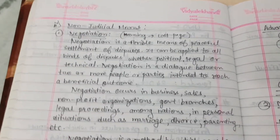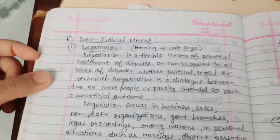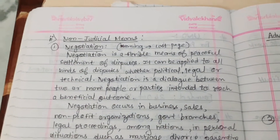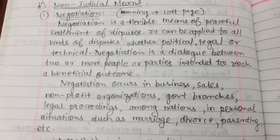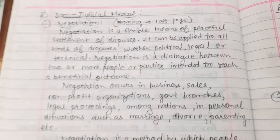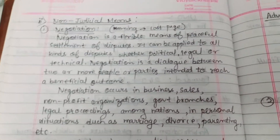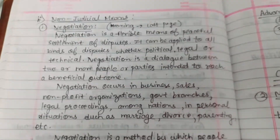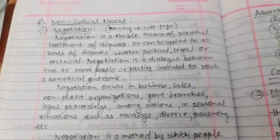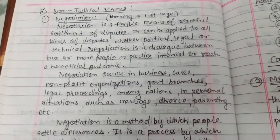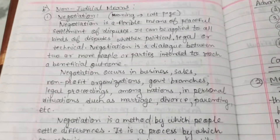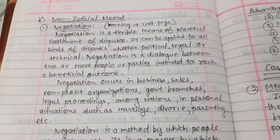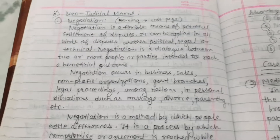In non-judicial means, first we are going to see negotiation. Negotiation is a flexible means of peaceful settlement of disputes. It can be applied to all kinds of disputes whether political, legal, or technical. Negotiation is a dialogue between two or more people or parties intended to reach a beneficial outcome.